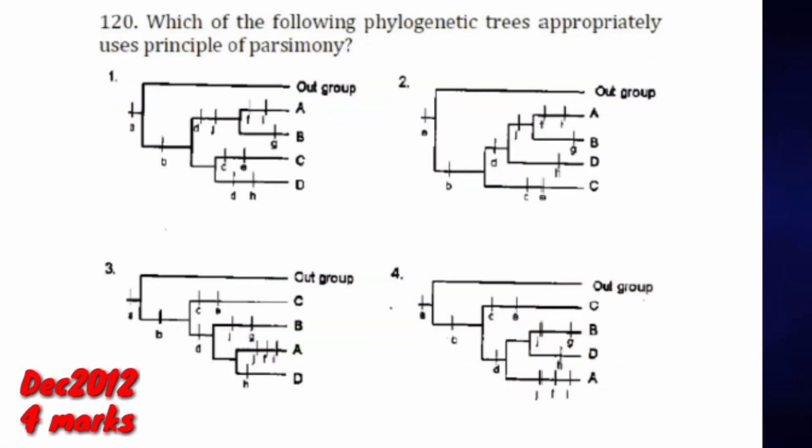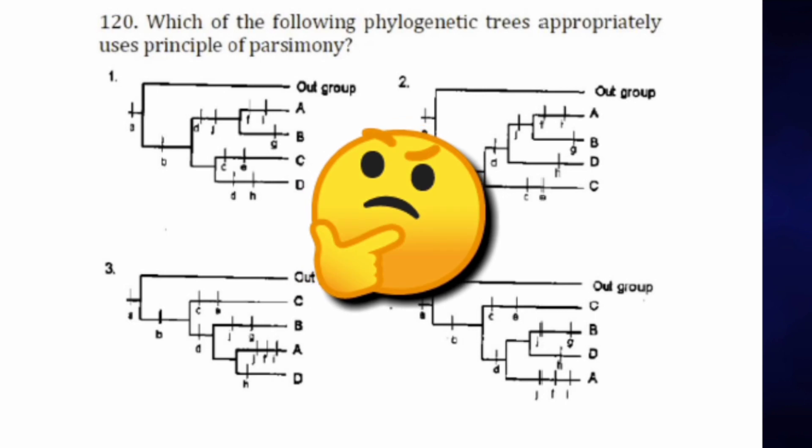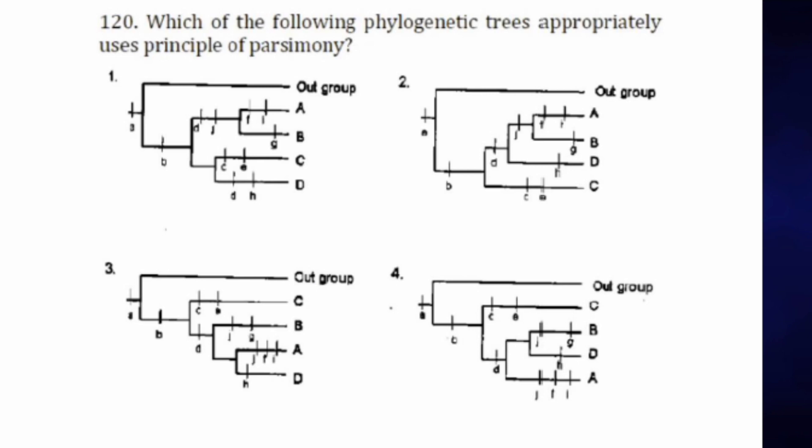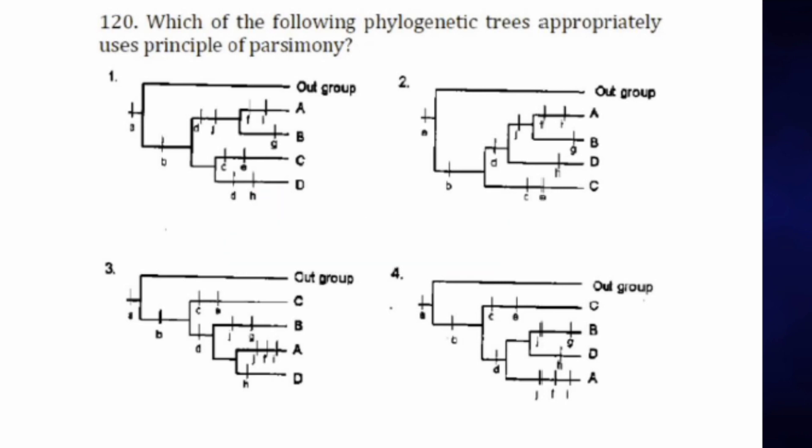Here comes our first question: which one of the following phylogenetic trees appropriately uses the principle of parsimony? The concept is very easy. If I explain it, you will never forget it in life. These are your options. What will be the answer? Just listen, I will explain it, but you have to pause. Do not watch it, then you will never learn. Pause it, then resume and go to the answer.